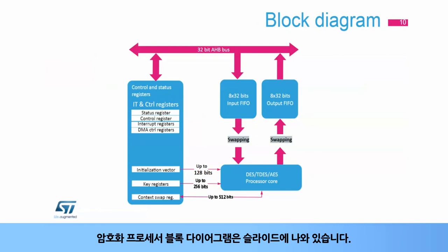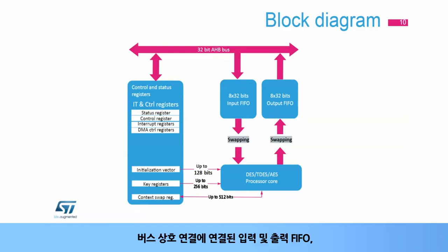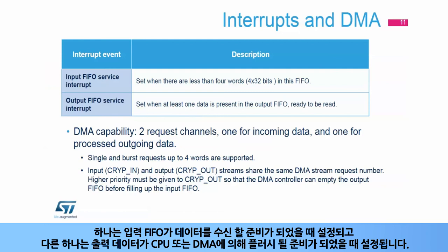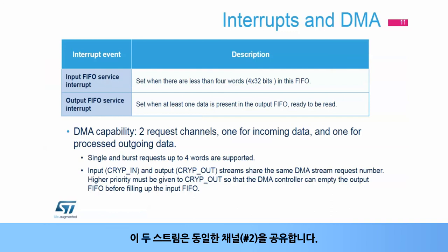The cryptographic processor block diagram is presented in the slide. The peripheral is composed of several hardware modules: the processor core responsible for one AES or DES block operation, input and output FIFOs connected to the bus interconnect, and a module that embeds control and status registers. Two functional interrupts are defined for the peripheral: one set when the input FIFO is ready to receive data, and one set when output data are ready to be flushed by the CPU or the DMA. The DMA has two streams plugged to the cryptographic processor. These two streams share the same channel, number two. The output stream has higher priority than the input one.